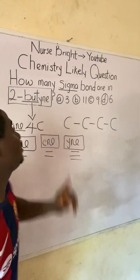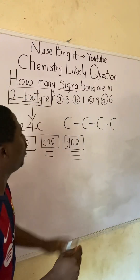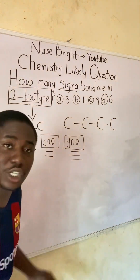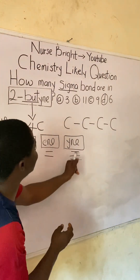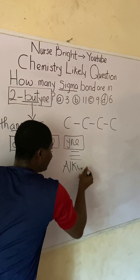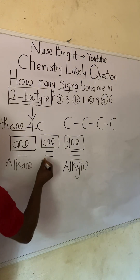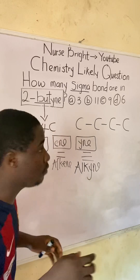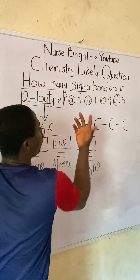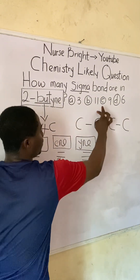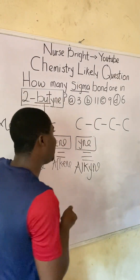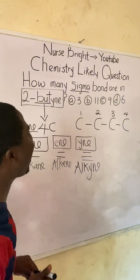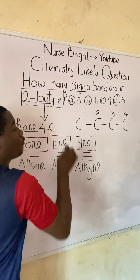Specifically, it is '2-butyne.' The '2' here shows us the position of the carbon to which the functional group is found — because these are functional groups, and they tell us the chemical property of that compound. The '-yne' ending tells me this compound is an alkyne. So it is 2-butyne, and we have four carbons. Which will I call the second carbon? Let's count: one, two, three, four — so this is my second carbon.